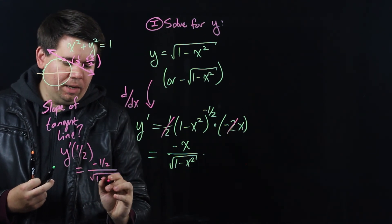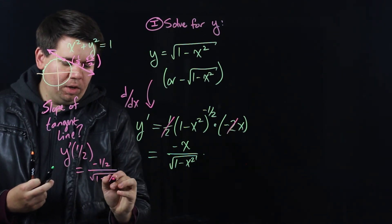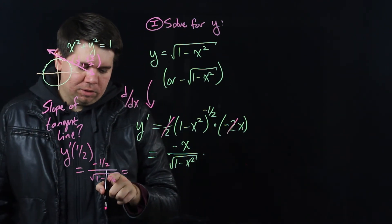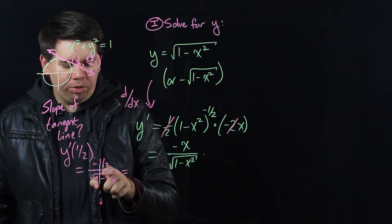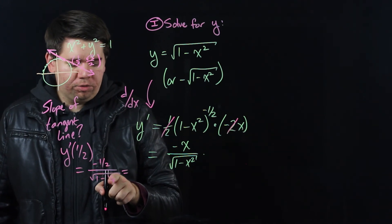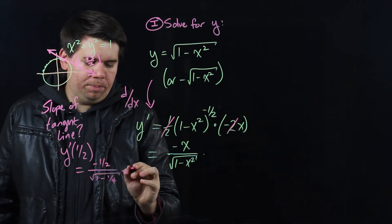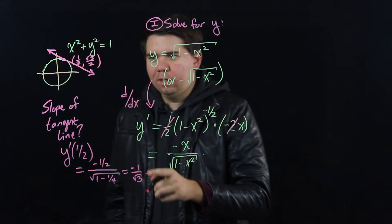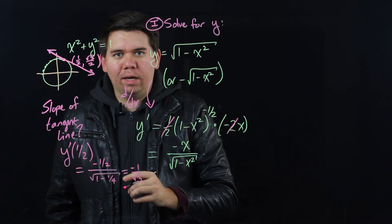And we would get, if you plug a half, it's minus a half on top all over the square root of 1 minus a half squared, so 1 minus a fourth. Let's think about what that gives us. So on bottom we'll have √3 over the square root of 4 which is 2. And you end up with minus 1 over √3. Great. We get the slope of our tangent line.